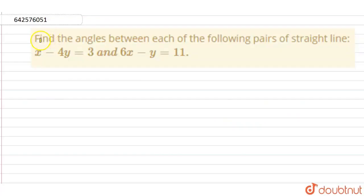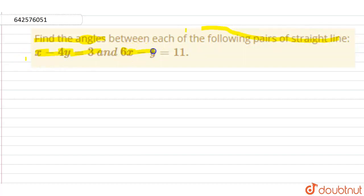Hello students, now here is our question. We have to find the angle between each of the following pair of straight lines where our first line is x minus 4y is equal to 3 and second line is 6x minus y is equal to 11. So now we have two lines. Our first line is x minus 4y is equal to 3.